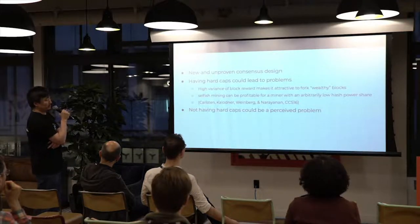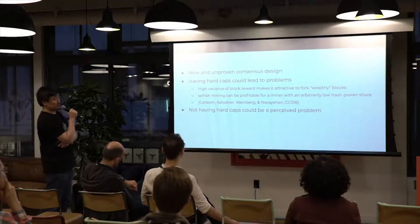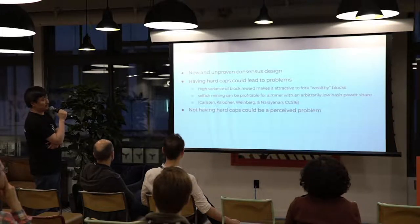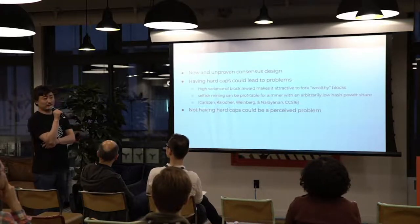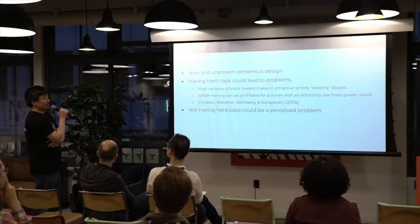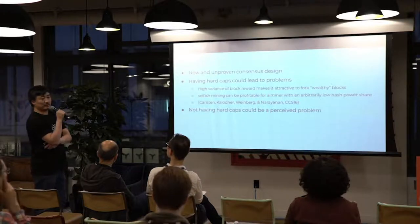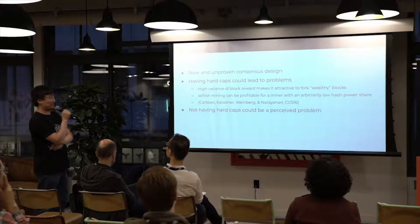Selfish mining can be profitable for a miner with arbitrarily low hash power — you can Google 'CCS16' for the paper on that. Having hard caps could also be a perceived problem because people want to purchase tokens and capture part of the value the network generates. With a hard cap, one Bitcoin token captures one out of 21 million of Bitcoin's total value. But without a hard cap, that's very difficult to guarantee over time.